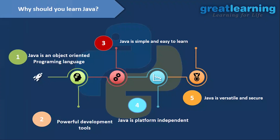Now we'll see why Java is so popular and why you should learn it. Java is an object-oriented programming language, and it is simple and easy to learn. If you are a beginner with no programming experience, Java syntax is very simple to start with. Java has many powerful development tools. Java is also platform-independent — meaning you don't need to think about which platform you are working on.